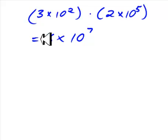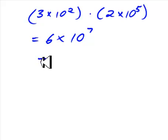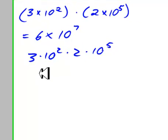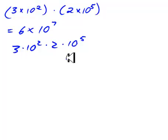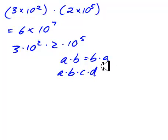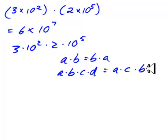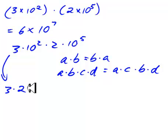But why is the rule that? Why do we multiply the coefficients and add the exponents? Let's take a look at what this problem is really saying: 3 times 10 to the 2, times 2 times 10 to the 5. In algebra, the commutative rule says if you have A times B times C times D, it doesn't matter what order you multiply them — the order of multiplication doesn't matter. So I'm going to rewrite it in a different order.